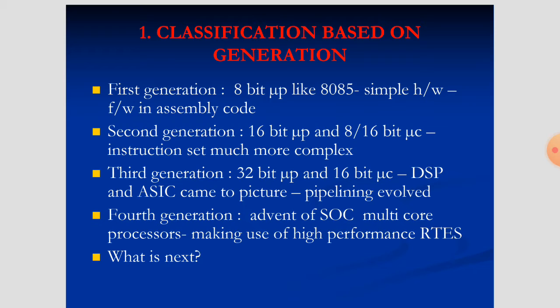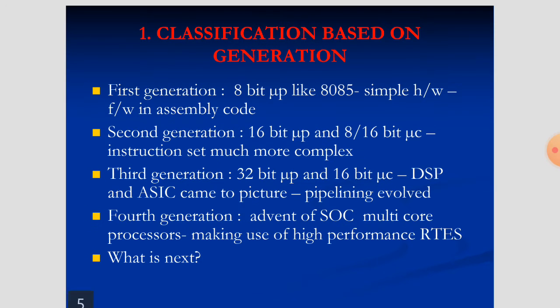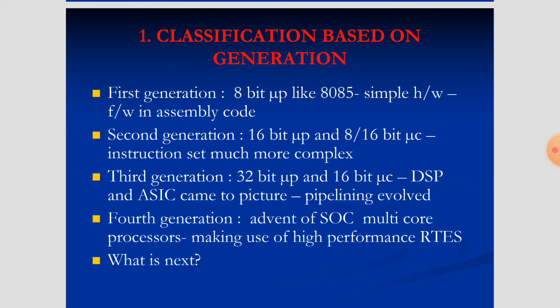Classification based on generations: there are first, second, third, fourth, and now fifth generations. First generation embedded systems were designed using 8-bit microprocessors with simple hardware and firmware, writing code in assembly language. The second generation moved to 16-bit microprocessors or 8-bit microcontrollers, still writing in assembly code but becoming more complex in terms of instructions.